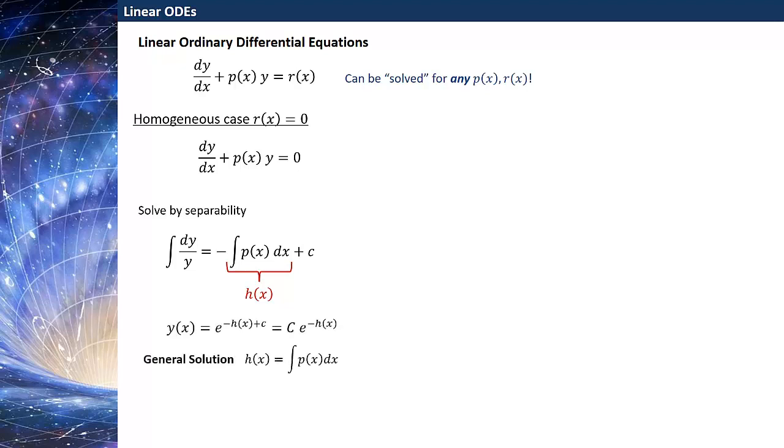The solution then is y(x) equals e to the minus h plus c, or I can pull that constant out in front as an overall multiplicative constant C. So the solution is y(x) equals C e to the minus h(x), and h(x) is defined as the integral of p(x)dx. This is the general solution for the homogeneous case.